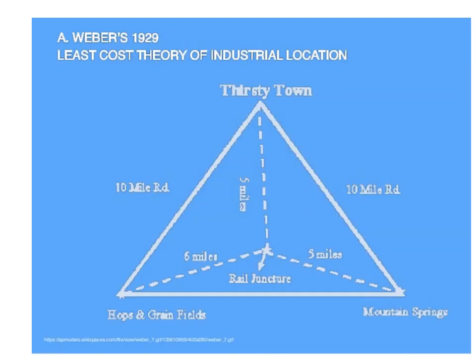This slide refers to the least-cost theory of industrial location, proposed by Weber in the year 1909. It considers three elements: the thirsty town, hops and grain field, and mountain spring — and their interrelationship.